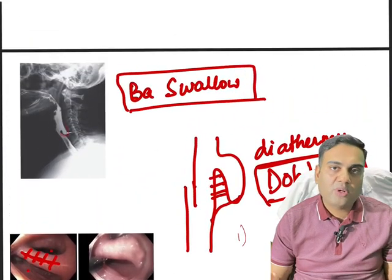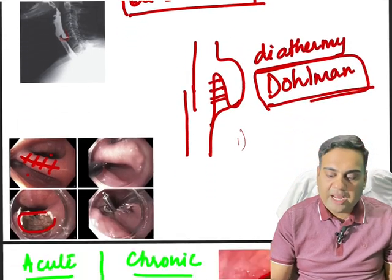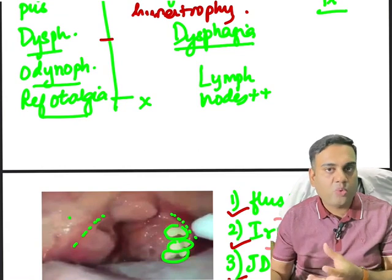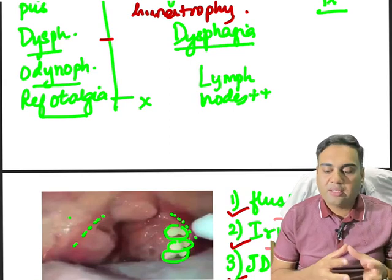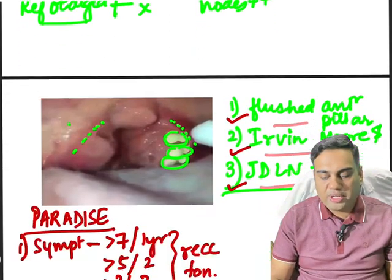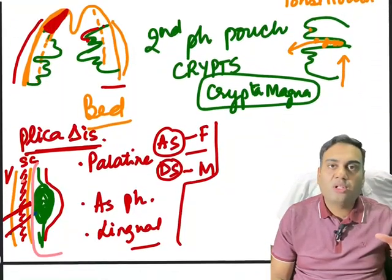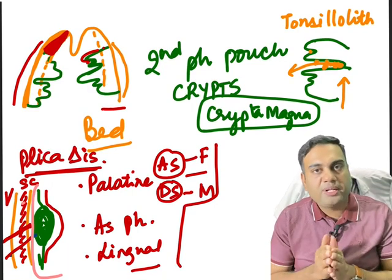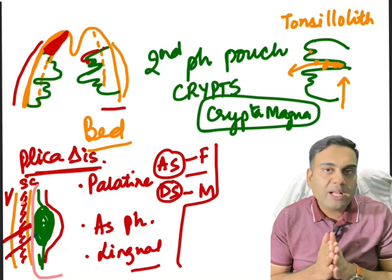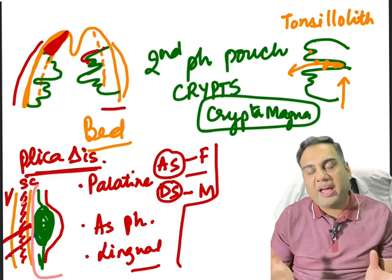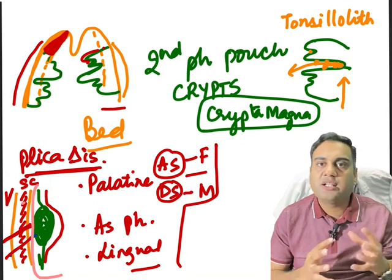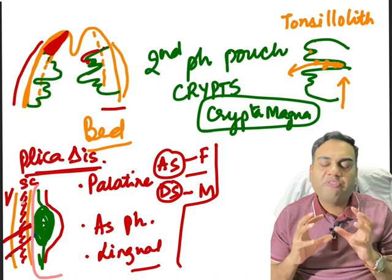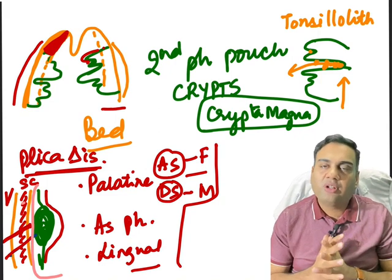Now we know the important diseases from the hypopharynx — Zenker's diverticulum — and the oropharynx — acute and chronic tonsillitis. You will all be able to answer questions based on this. We have one more lecture on diseases of pharynx covering nasopharyngeal diseases: nasopharyngeal angiofibroma and nasopharyngeal carcinoma. Stay with me for the next lecture. Thank you.